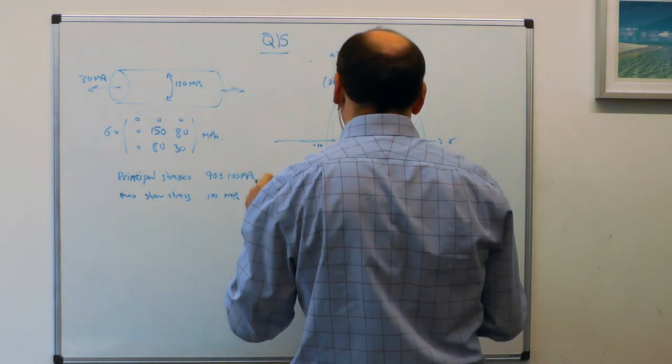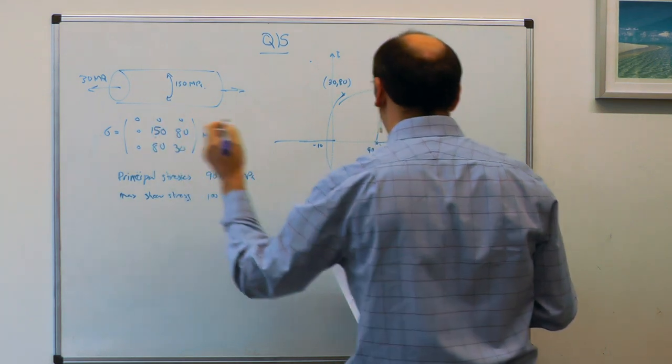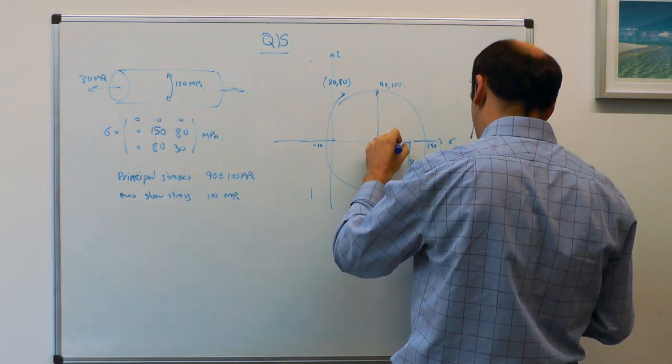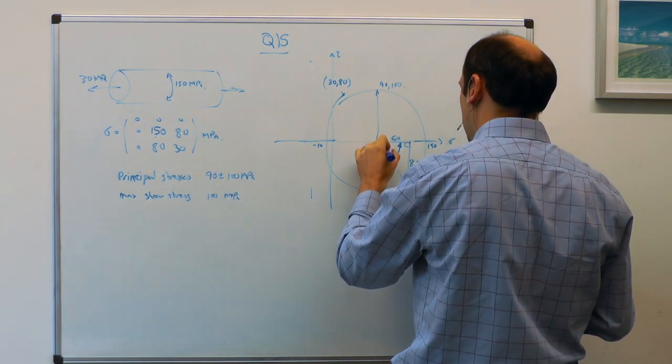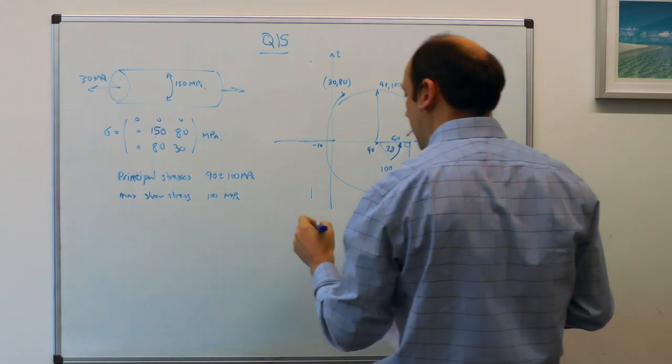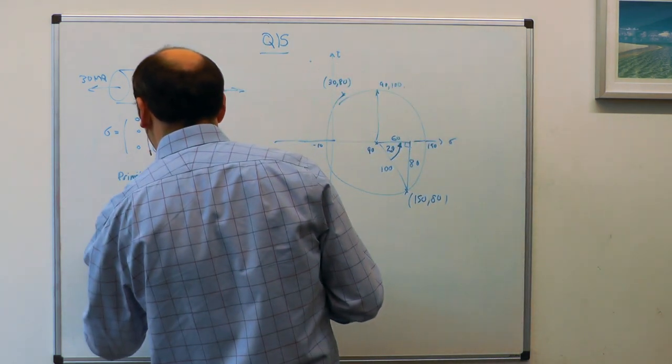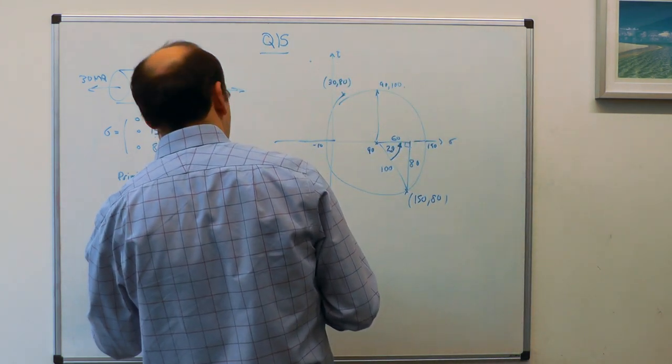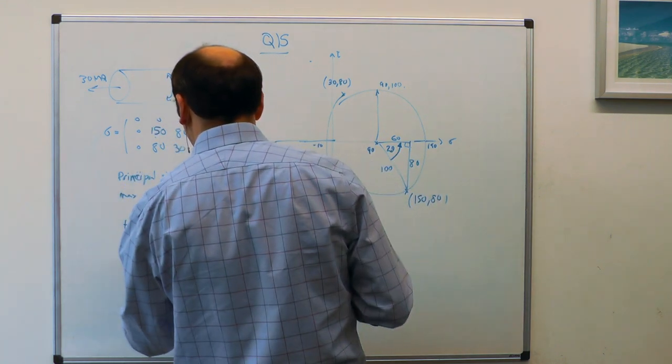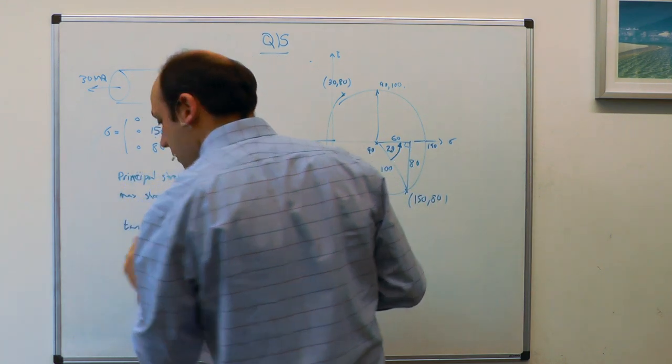What's the angle to the hoop axis? Well, the hoop axis was the 150, so the angle to the maximum principal stress axis, that's 2 theta. And we can say that tan 2 theta is equal to opposite over adjacent, 80 over 60, which is 4 thirds.